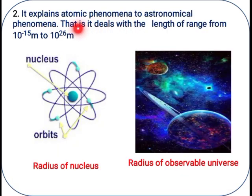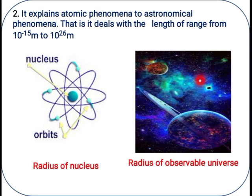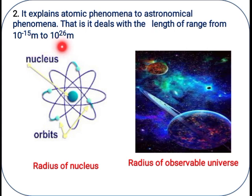Physics explains phenomena from atomic phenomena to astronomical phenomena. Atomic means particles which are smaller in size, while astronomical means space-related phenomena. The physical quantities such as size, mass, and length, when considered for these phenomena, can be very huge. Physics deals with a length range from 10 raised to minus 15 meters to 10 raised to 26 meters.